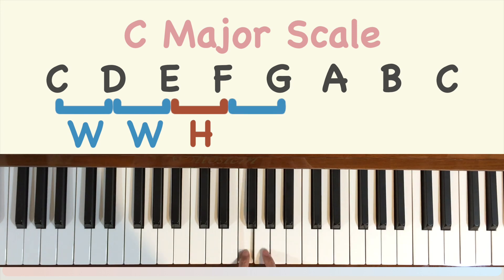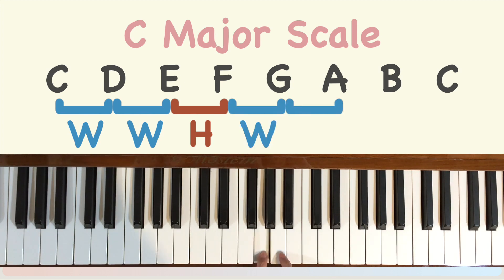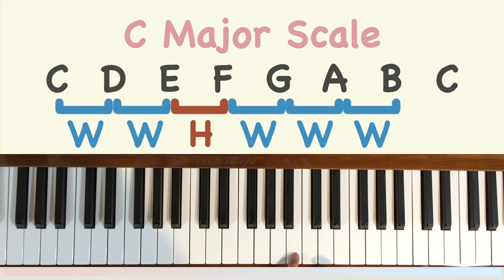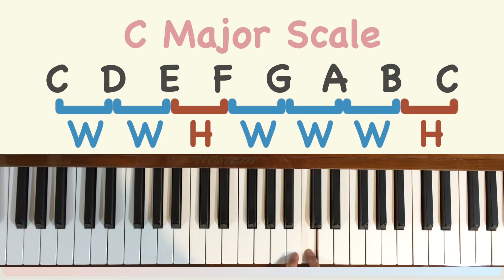F to G is a whole step. G to A is a whole step. A to B is a whole step. And the distance between B and C is a half step because there is no key between them.